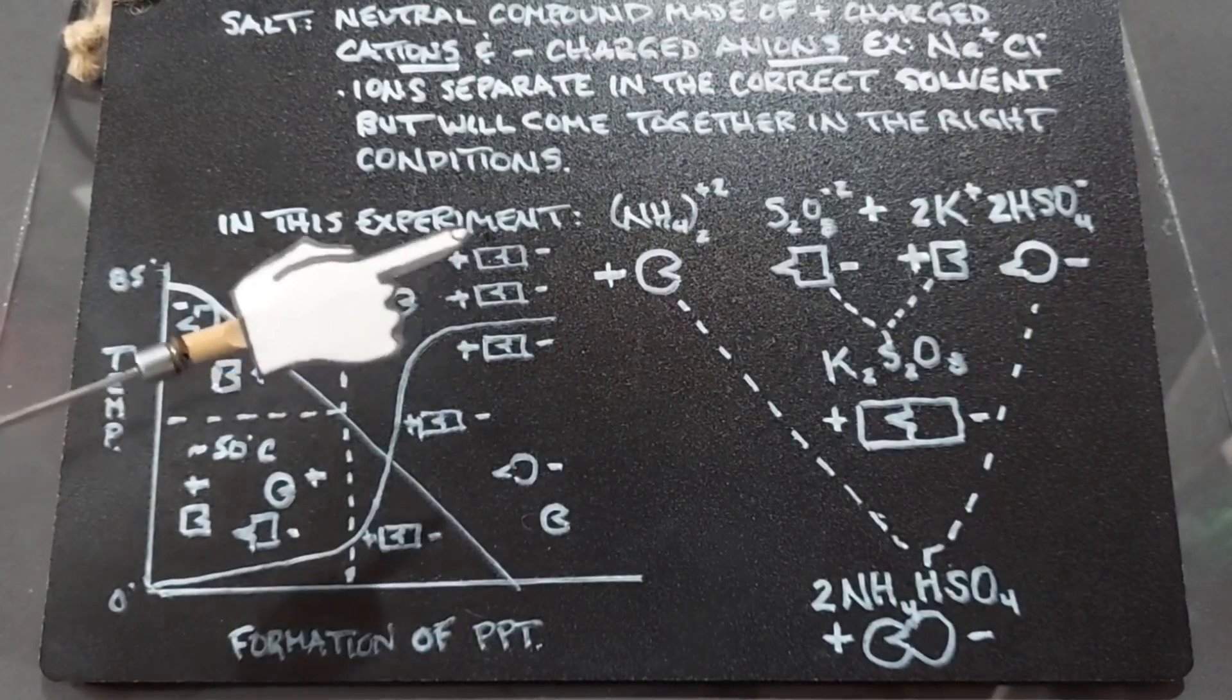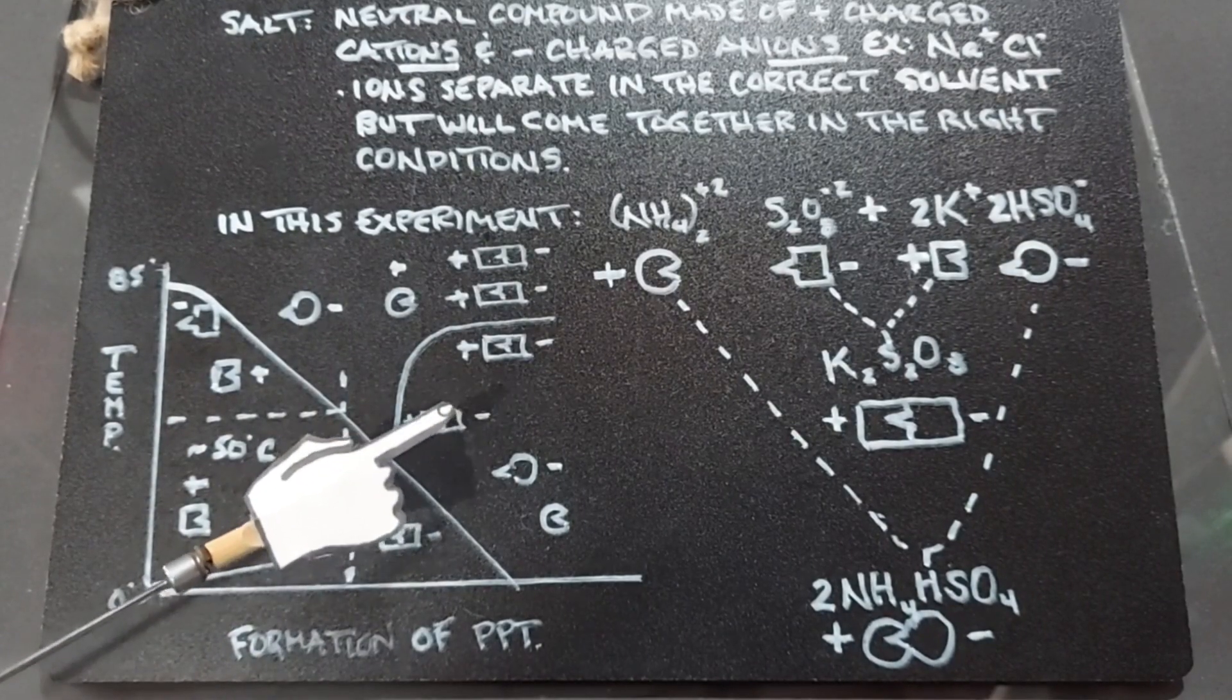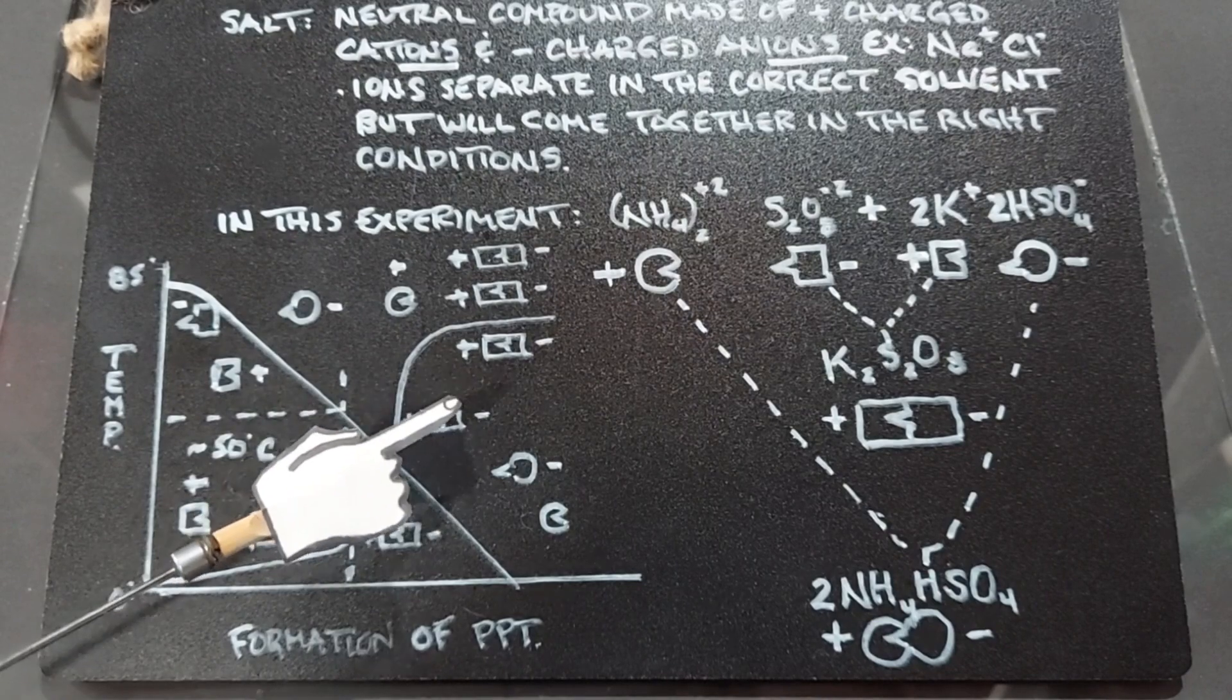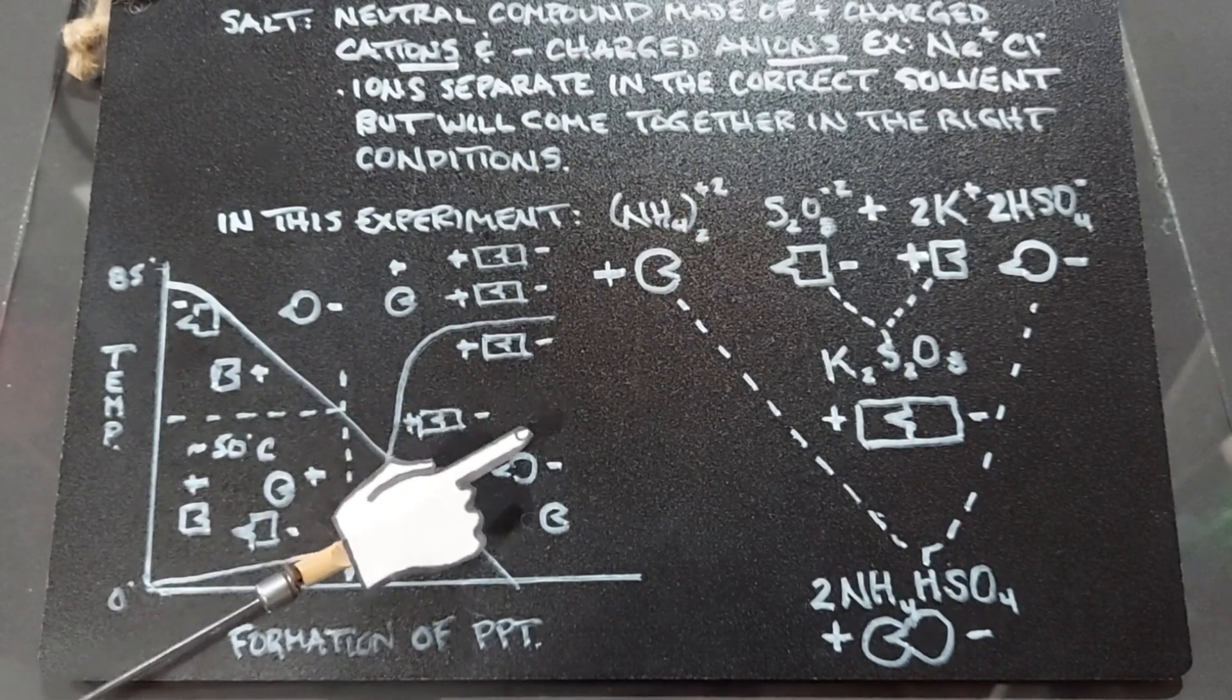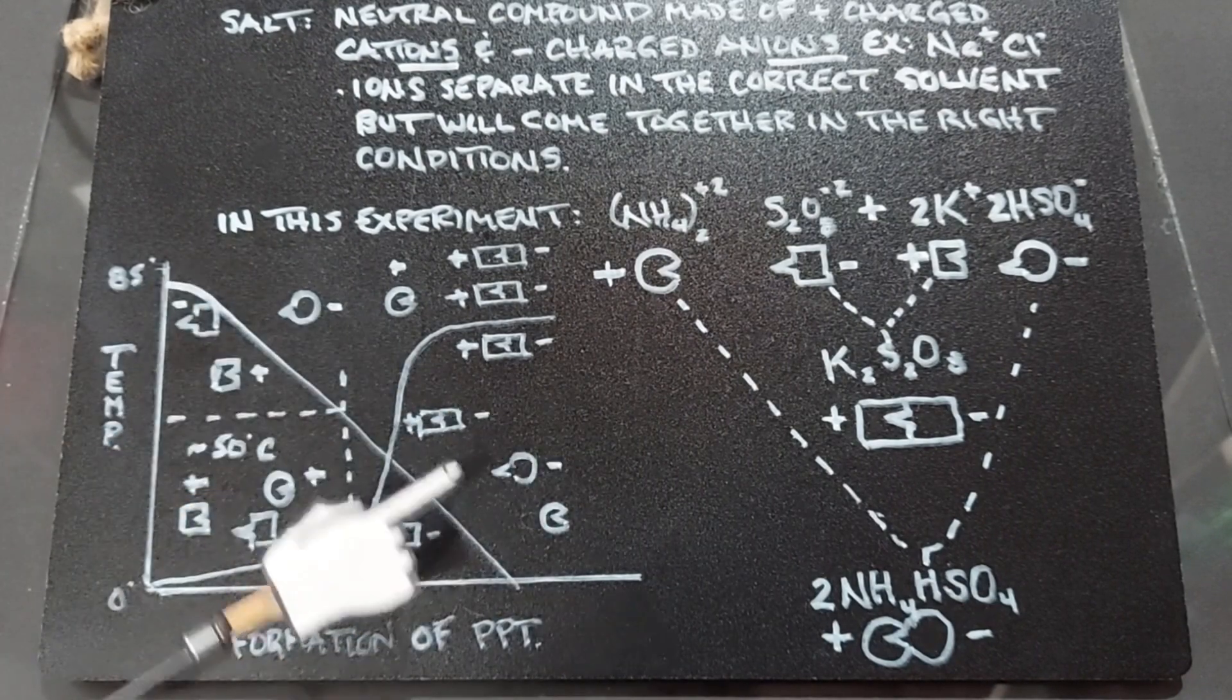And the reason the ammonium and the bisulfate will never come together is because to get that particular chemical out of solution, you need to dehydrate, evaporate the water, and then you will get your ammonium bisulfate crystals left at the bottom of the beaker. They will not come out of solution because of temperature changes.